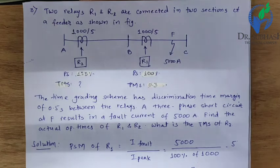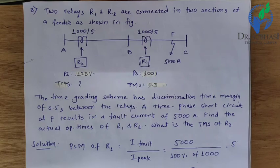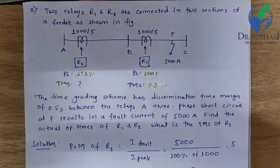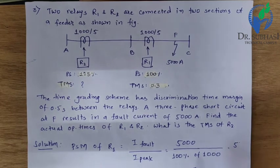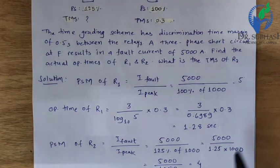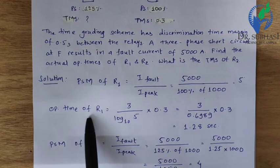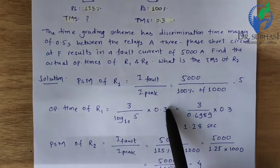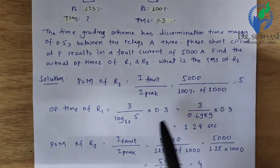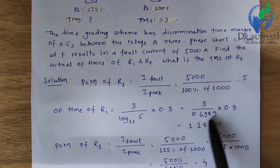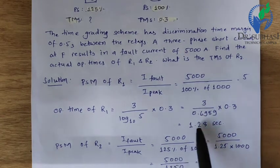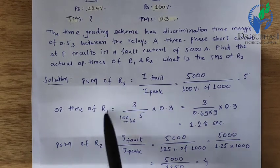For R1: PSM = I_fault / I_pickup = 5000 / (100% × 1000) = 5. Operating time T = 3 / (log10(PSM)) × TMS = 3 / (log10(5)) × 0.3 = 1.28 seconds. This is the operating time of R1.